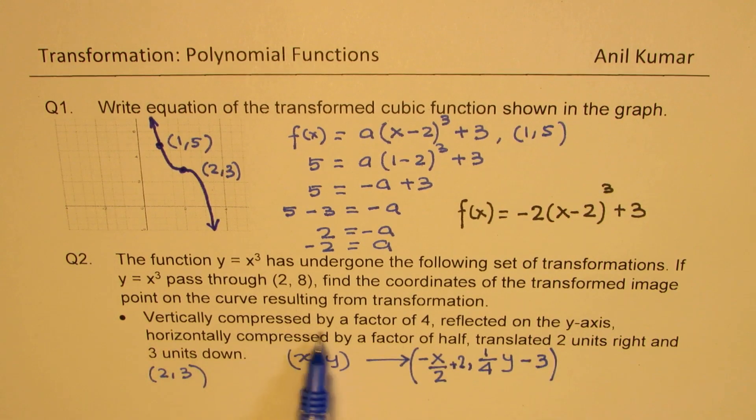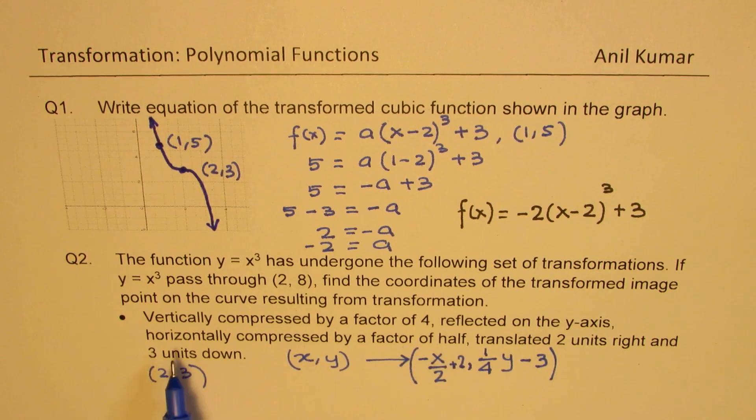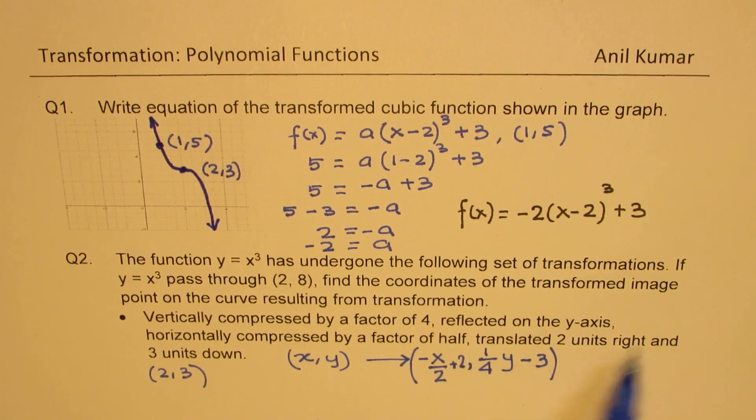See, vertically compressed by a factor of 4, reflected on the y axis, this negative, horizontally compressed by a factor of half, it is compressed horizontally, translated 2 units right, add 2. And 3 units down, subtract 3, perfect.